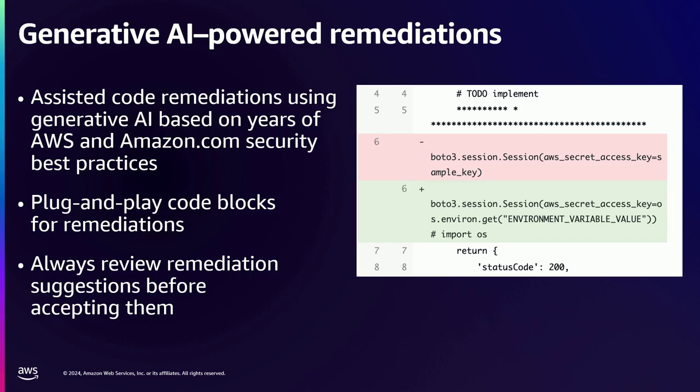This is not the first time we are doing this. Amazon Inspector and this particular remediation practice have been used at AWS and Amazon internally — borrowing best practices from AWS security, having undergone over a million-plus code vulnerability assessments at Amazon. It's a battle-tested feature. Once you detect a vulnerability, remediations are offered in a plug-and-play manner where you can download the patches and plug them into a CI/CD cycle. We always recommend having developers review the code remediations before committing them.